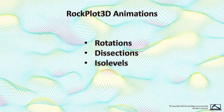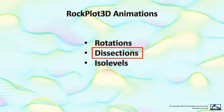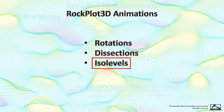The RockPlot 3D program includes three movie-making utilities: one for rotating diagrams, another for dissecting or slicing through block or solid models, and a third program for showing various geochemical, geotechnical, and geophysical cutoff levels.